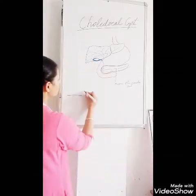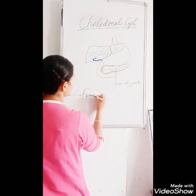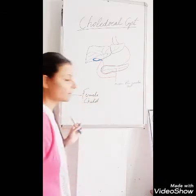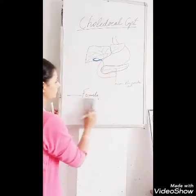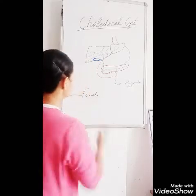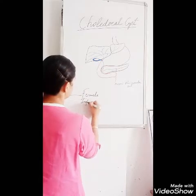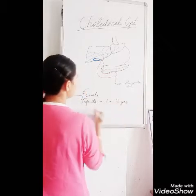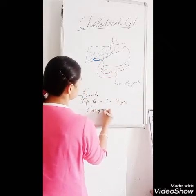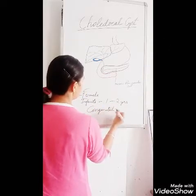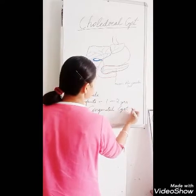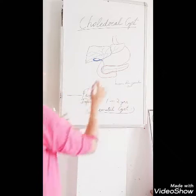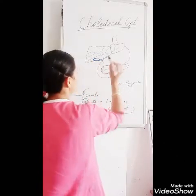It is common among females and is seen in infants between 1 to 2 years. It is a congenital cyst formed in the biliary tree, basically in the common bile duct.